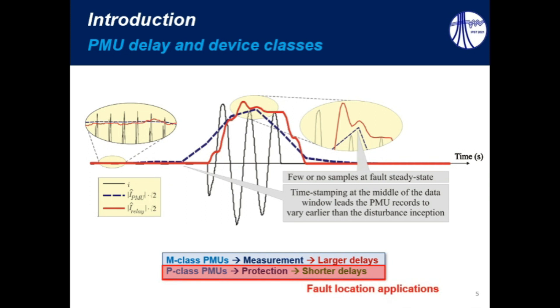Thus, if we consider these characteristics, it is easy to notice that if we are talking about fault location applications, I want to have samples during the fault steady state, and so it can be a problem if I have no samples here, and that is why M-class PMUs have not been used for this purpose.